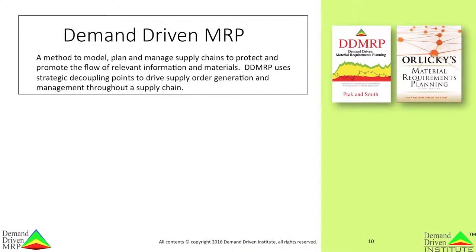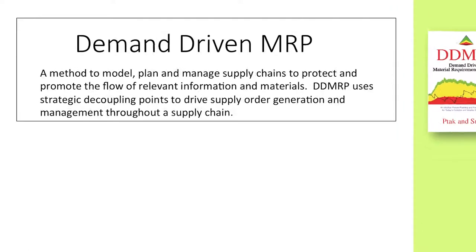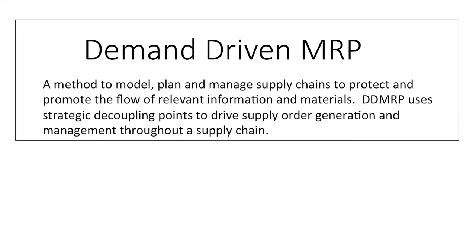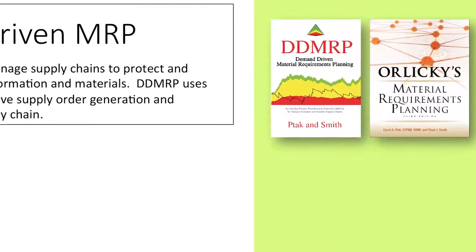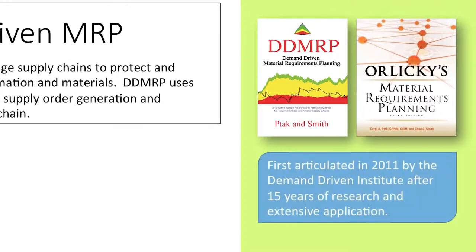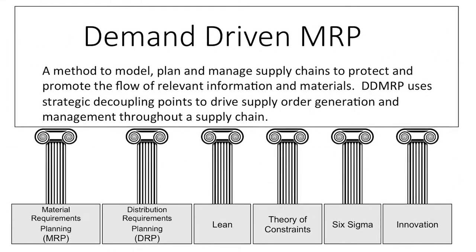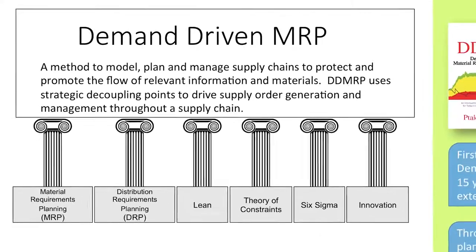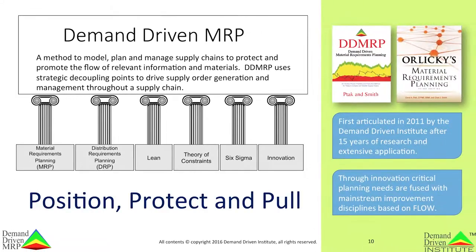This brings us to demand-driven material requirements planning, or DDMRP for short. DDMRP is a method to model, plan, and manage supply chains to protect and promote the flow of relevant information and materials. DDMRP uses strategic decoupling points to drive supply order generation and management through a supply chain. It was first introduced to the world in the third edition of Orlicky's Material Requirements Planning after 15 years of research and application. Through innovation, it fuses key planning requirements with today's prominent flow-based improvement methodologies. It can best be summarized as position, protect, and pull.